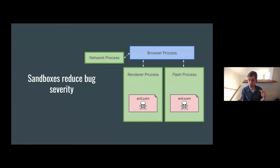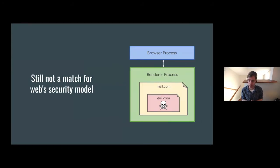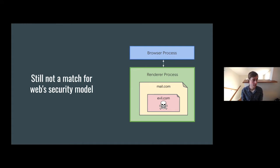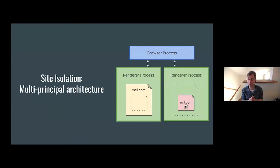More recently, we've split the whole network stack out of the browser process on most platforms and we're starting to get that into a sandbox as well, which is great because there's a lot of untrustworthy content being parsed in the network process. But even with all that, it still ultimately doesn't match the security model for the browser — it's not a good match for the same origin policy that says different documents should not be able to access each other. As long as we have cross-site iframes and pop-ups that can live in the same renderer process, we don't have a great boundary between websites. We've always wanted to fix that.